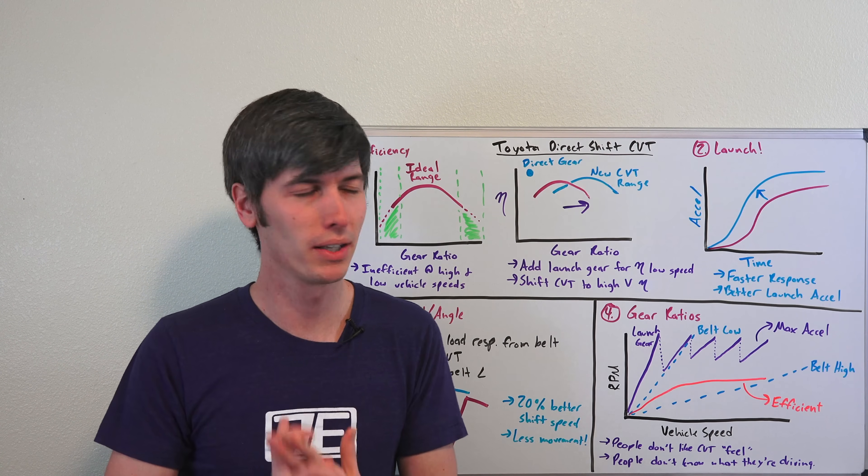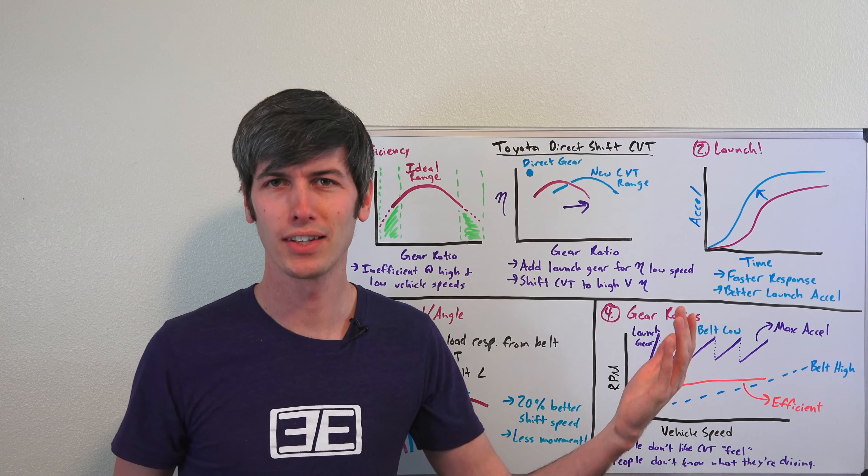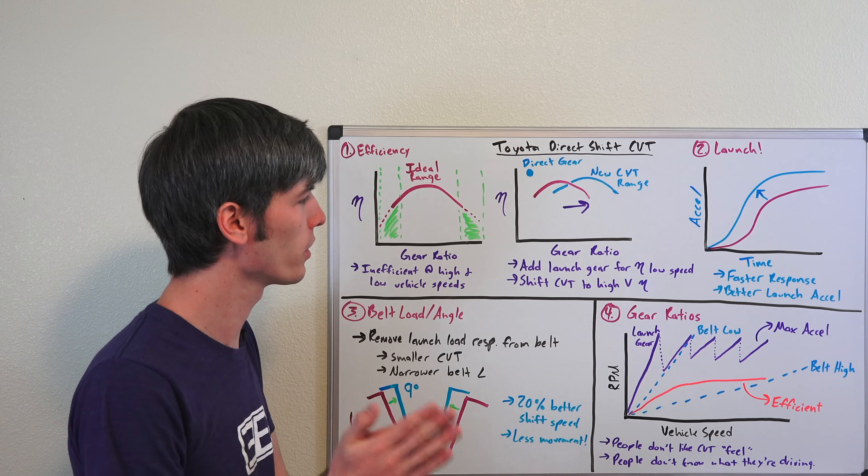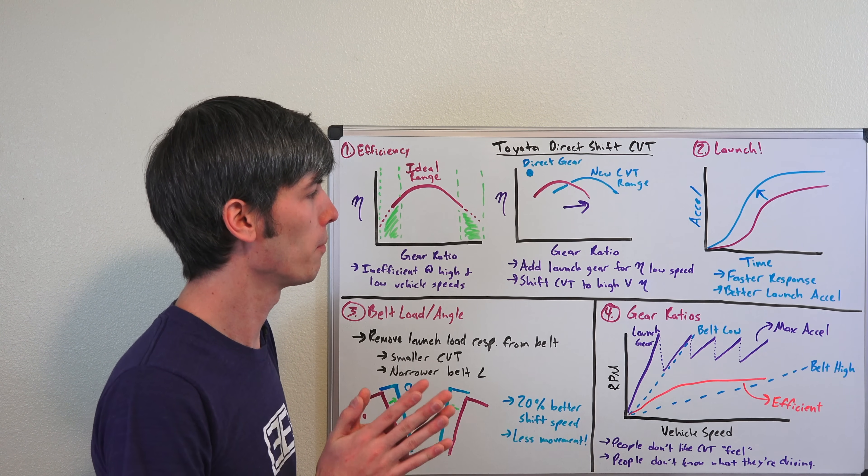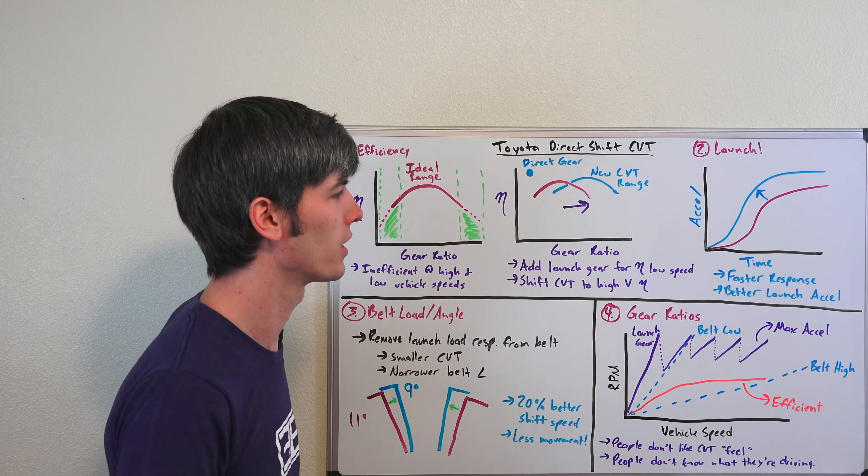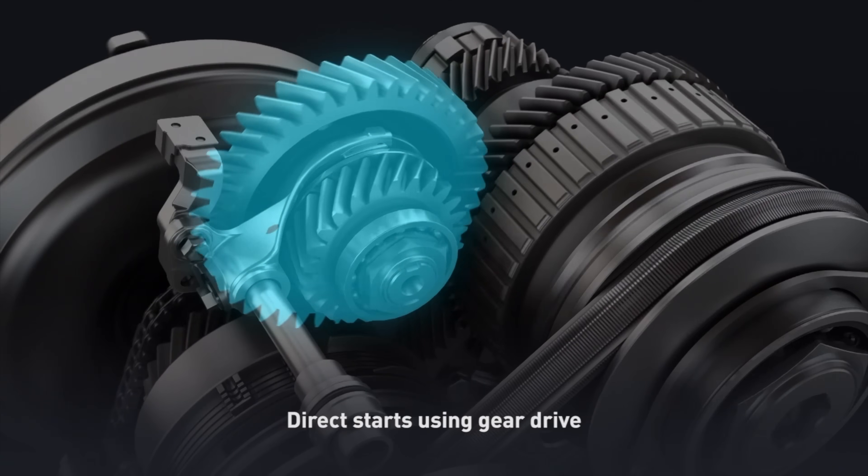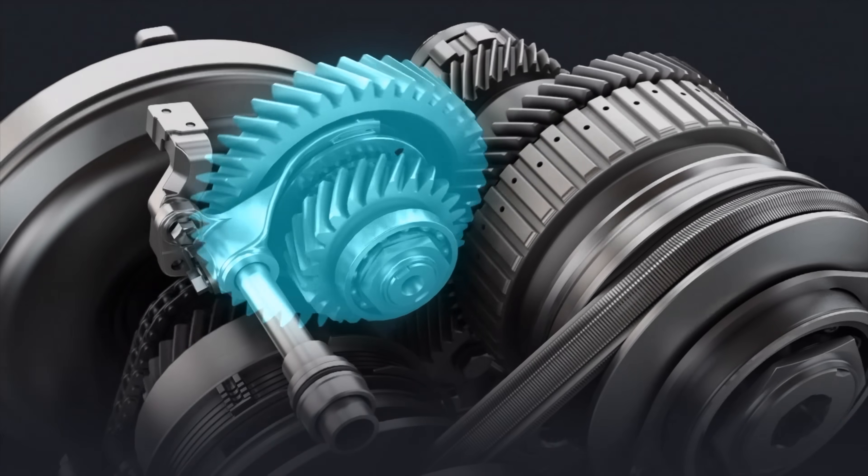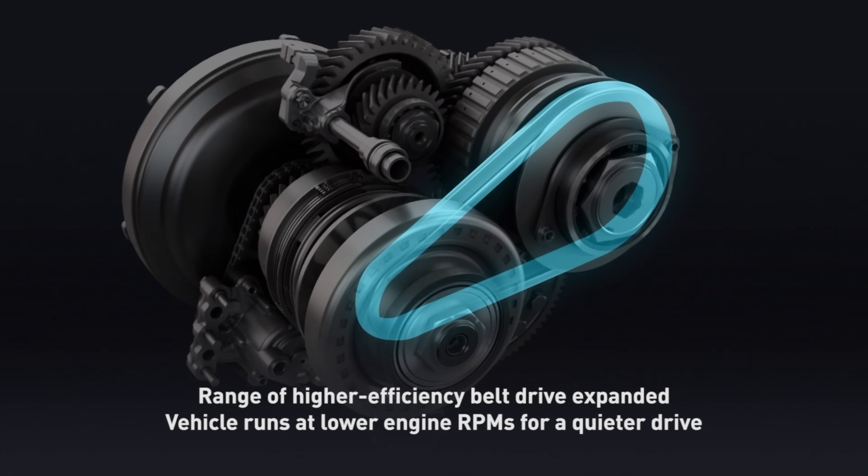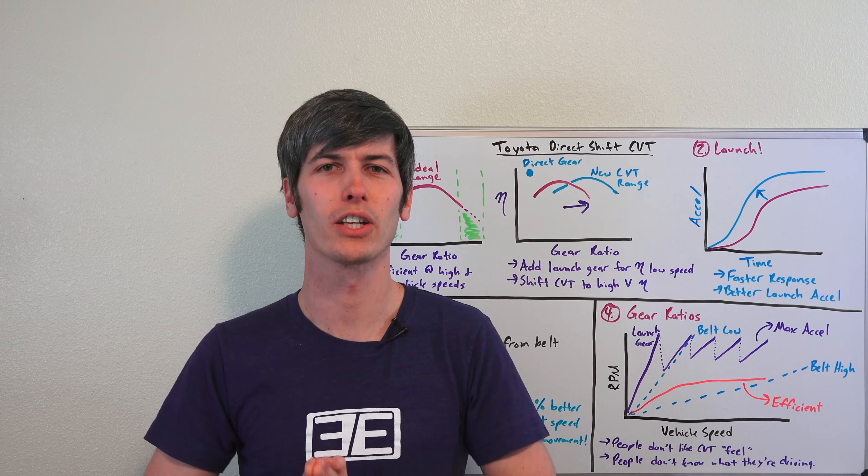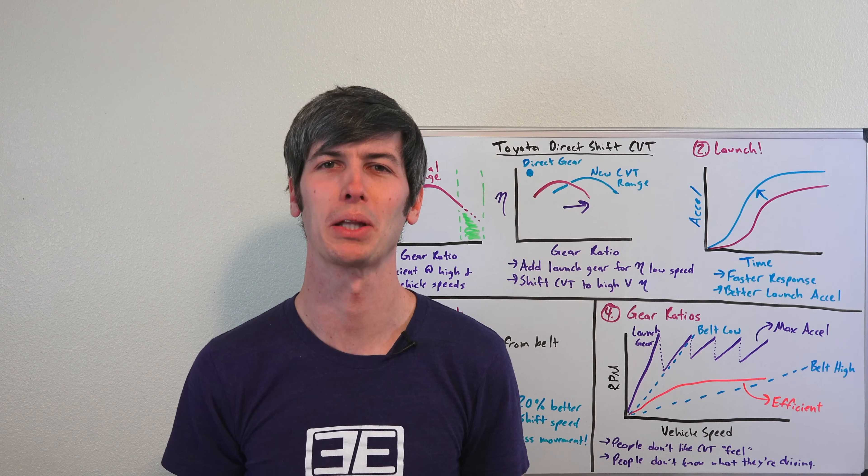There happens to be an 8-speed ZF transmission that's amazing, and it's getting put in everything now, and it's a great transmission. But there are also very good CVTs out there from a feel perspective. I think they've gotten a lot better than what they used to be, and I think it's cool that Toyota has introduced this launch gear into one of their transmissions. It'll be interesting to try out. So, thank you all for watching, and if you have any questions or comments, of course, feel free to leave those below.